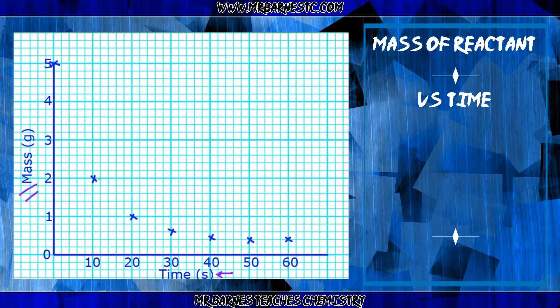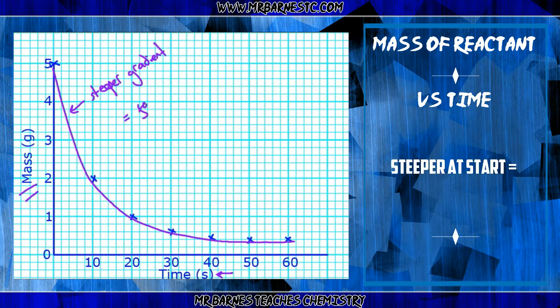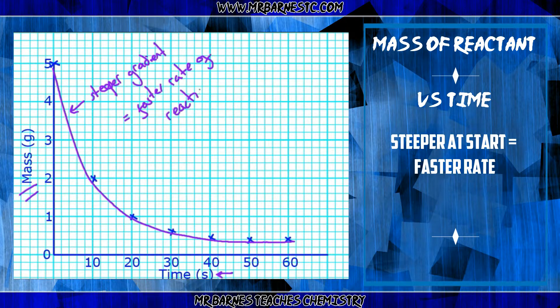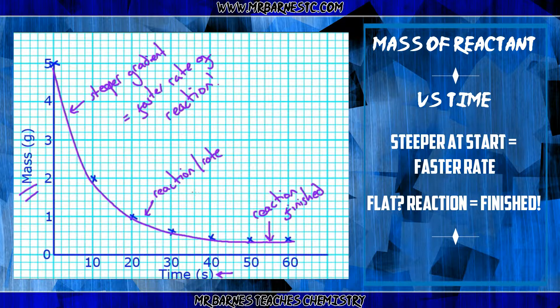Here is another example of a graph that you can get in the exam, which is the mass of the reactant over time. As you can see here, it's steeper at the start again, so I've got a faster rate of reaction at the start, and then the reaction is finished where it's gone flat. And again, the reaction rate is slowing as you go along.